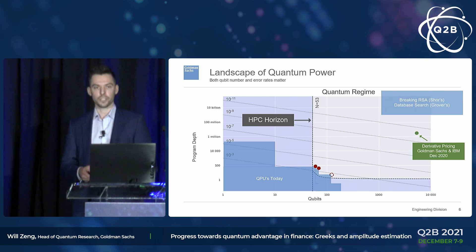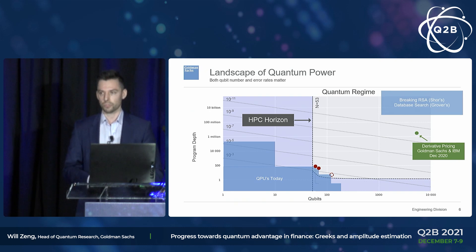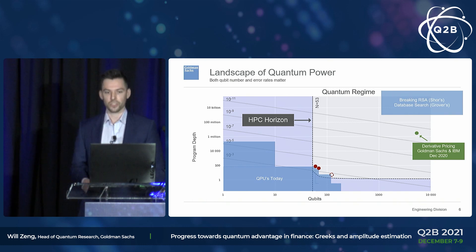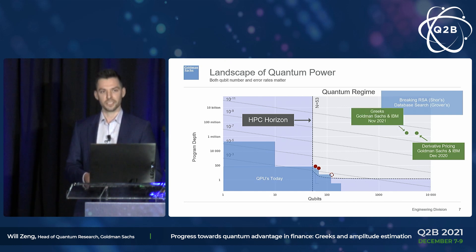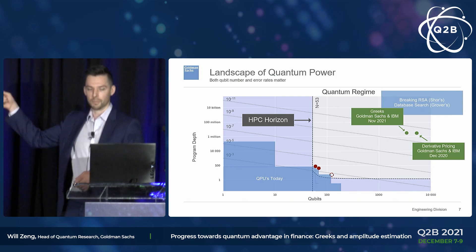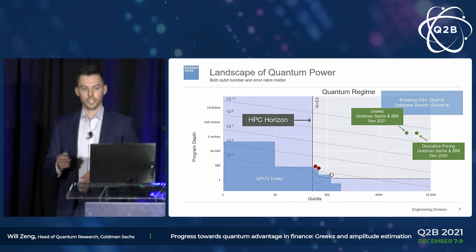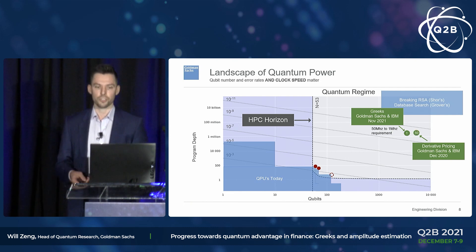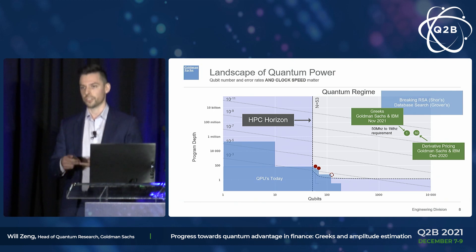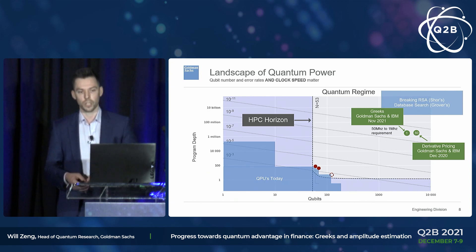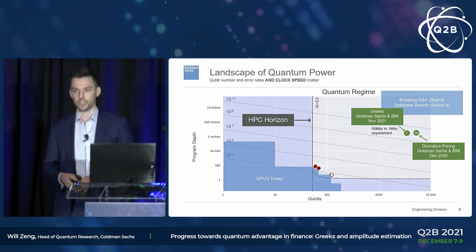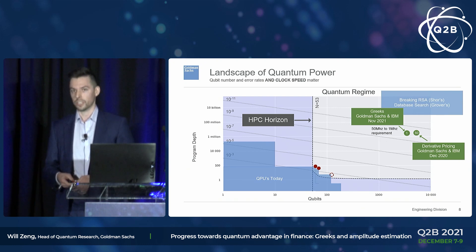Last year, we looked at derivative pricing — a problem very ubiquitous in finance and valuable to solve faster. Working with collaborators at IBM, we put that on this chart. A recent paper from a few weeks ago let us add another dot. Our entire research program is putting dots on this chart and moving them down and to the left. The key improvement is reducing the required logical T gate clock speed from about 50 megahertz down to about 1 megahertz.